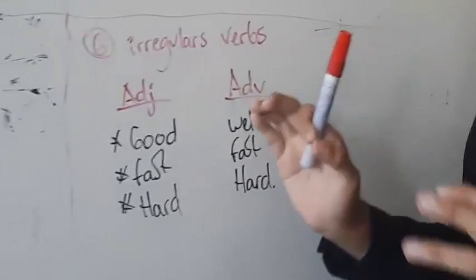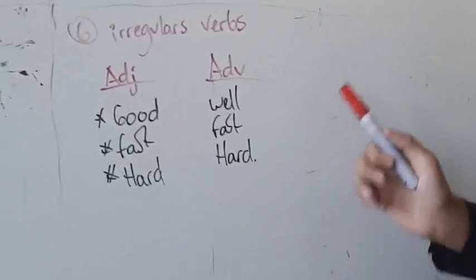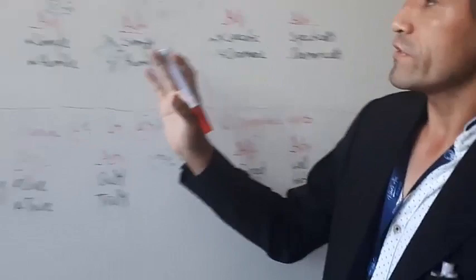The sixth rule that we have is irregular adverbs. For example, 'good' becomes 'well.' 'Fast' doesn't change — it stays 'fast.' 'Hard' doesn't change either — it stays 'hard.' So pay attention to that.